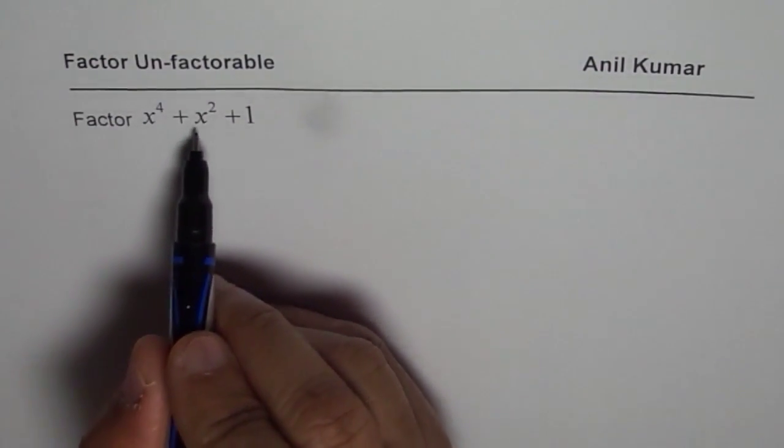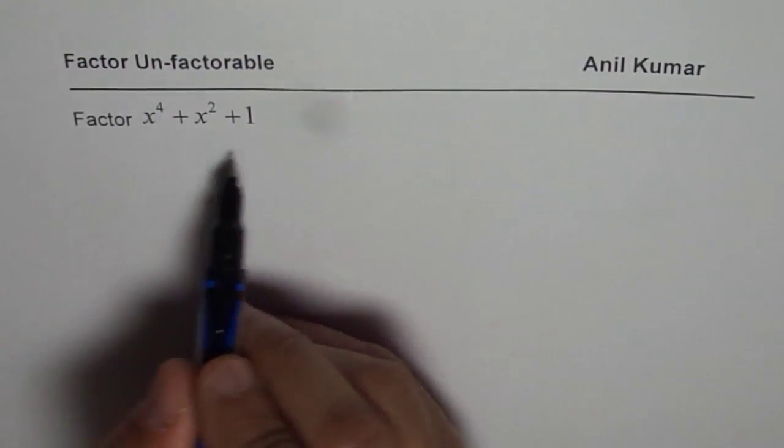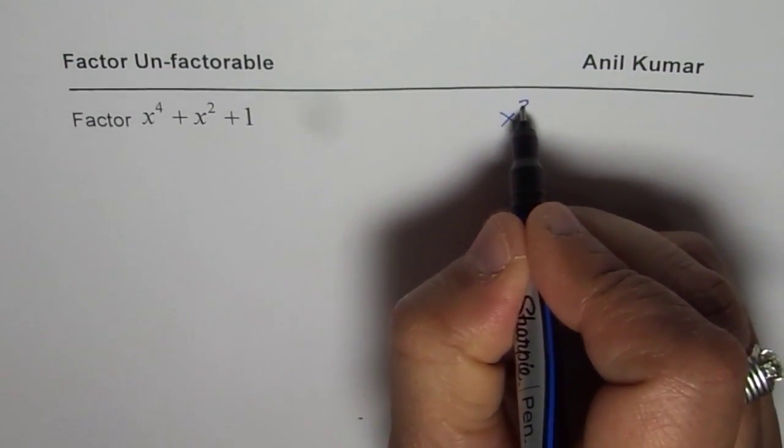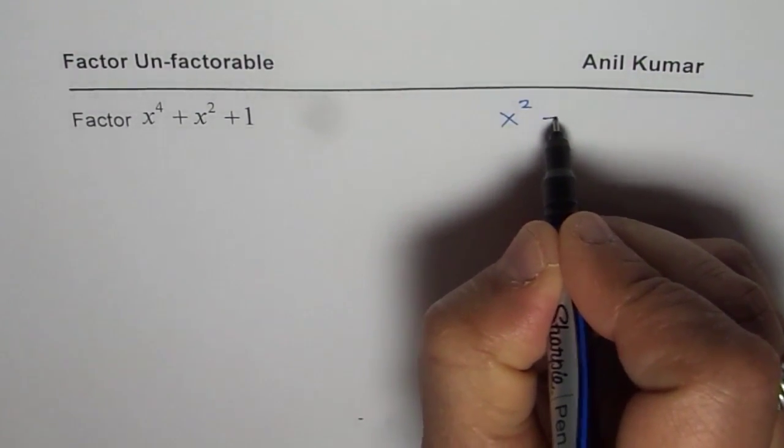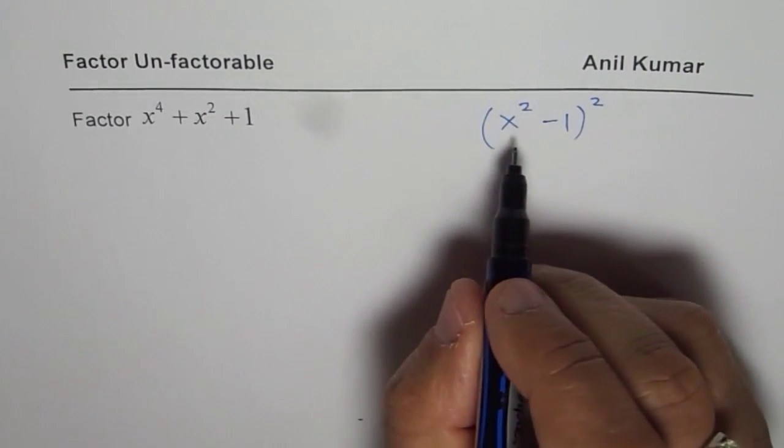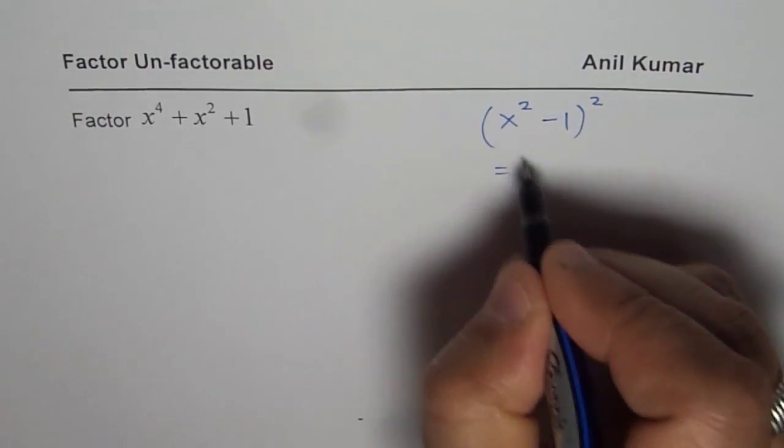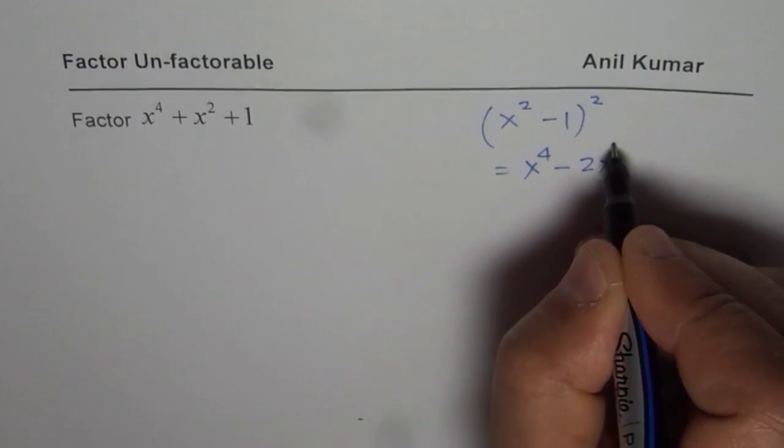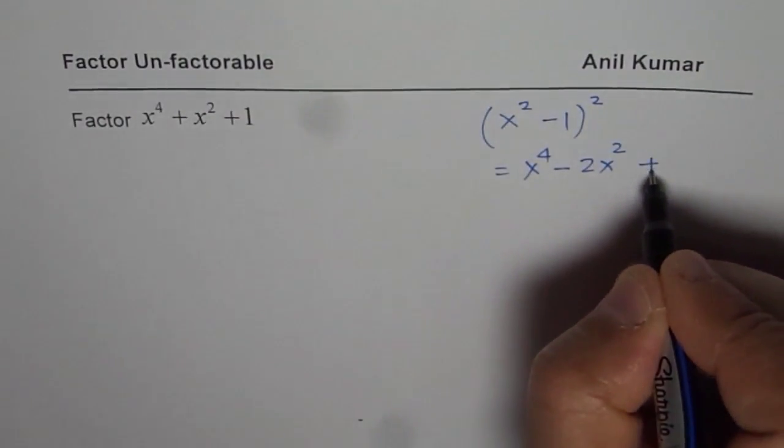We have x to the power of 4 plus x square plus 1. If I have to factor, let's try this out. What is x square minus 1 whole square? So if I write x square minus 1 whole square, I will get x to the power of 4 minus 2x square plus 1.